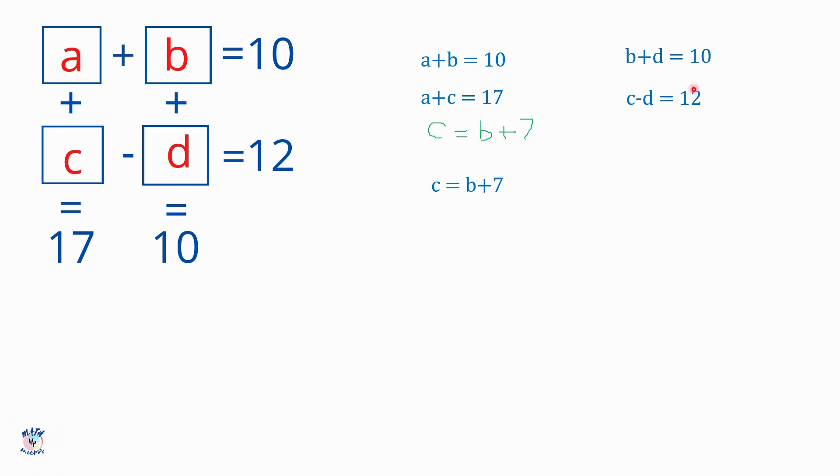What I can see from these two equations is that I have D in common. So what I can do is I try to cancel this. When I add this, the plus D and the minus D cancel together so that I get B plus C is equal to 10 plus 12, which is 22. So this is how I get another equation.